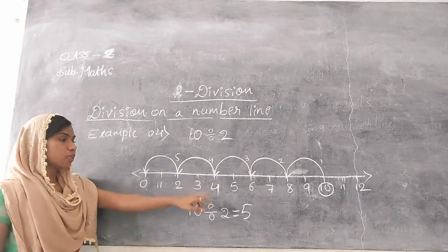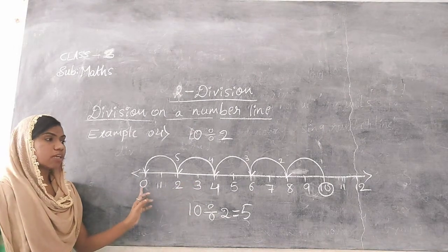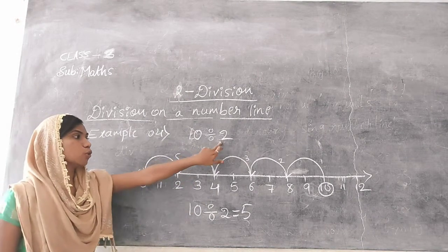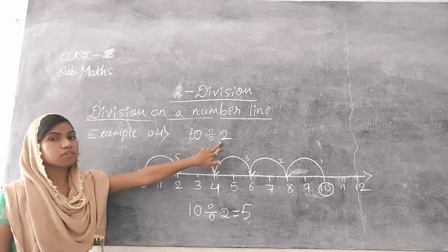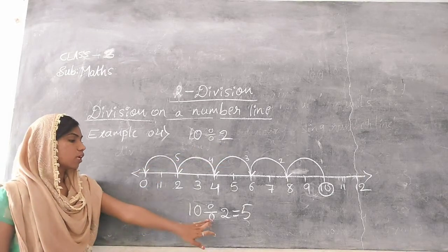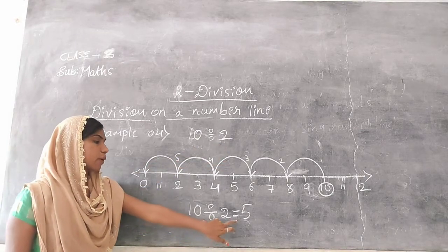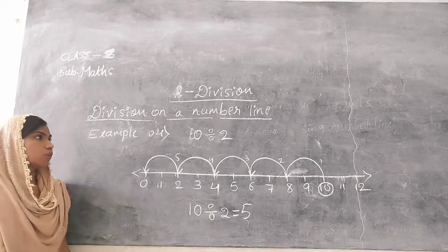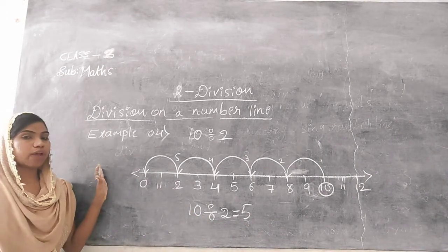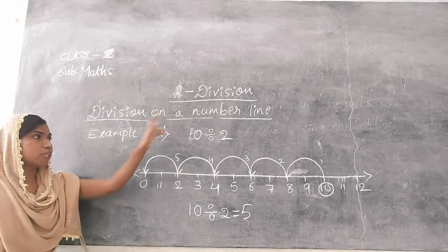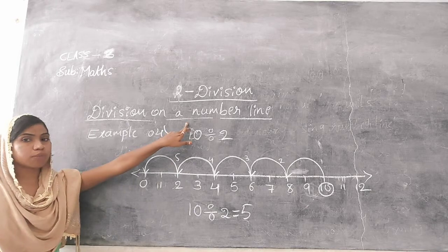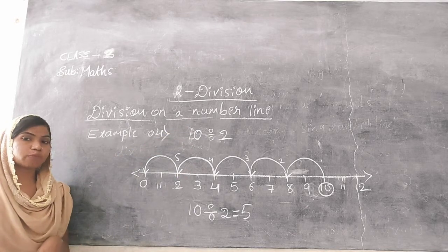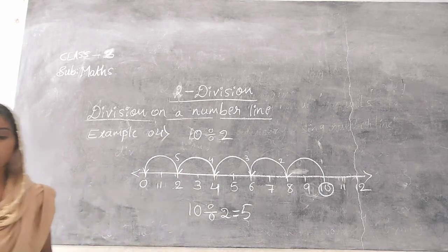From 10 to 0, I jumped 5 times by taking 2 steps in each jump. Therefore, 10 divided by 2 is equal to 5. So this is how we can divide by using a number line. We will continue in the next class.